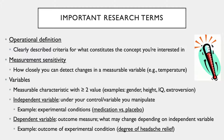A variable is any measurable characteristic that has two or more values — for example, gender, height, IQ scores, levels of extroversion, or even degree of headache. Variables in quantitative research are divided into independent and dependent variables. The independent variable is the variable under the control of the researcher — that is, the variable that is manipulated as part of the research study.